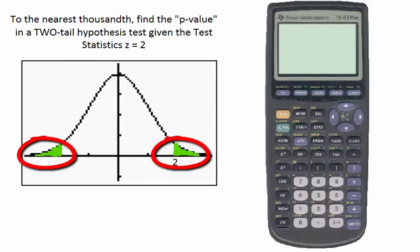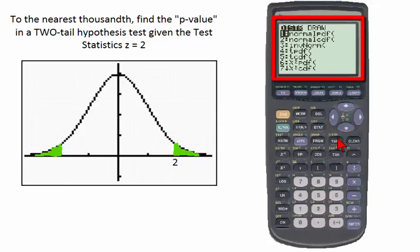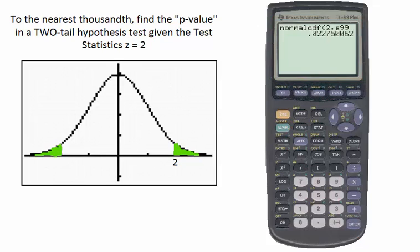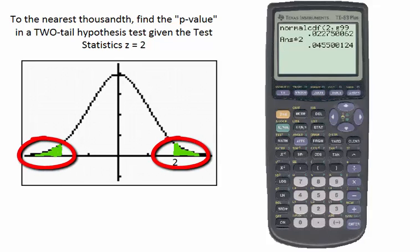Using the TI-83, go to second, distribution, and select the normal cumulative density function. We go from 2 up to infinity, or E99 — the same answer as the right-tail test. Then simply click the multiply button and multiply by 2, because there are two tails. The area under the curve in two tails — that is, the p-value for a two-tail hypothesis test with a test statistic of 2 — is 0.0455.